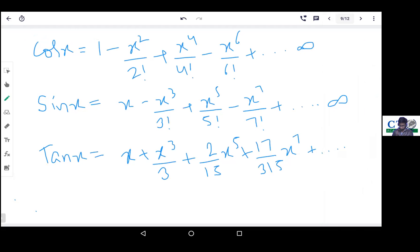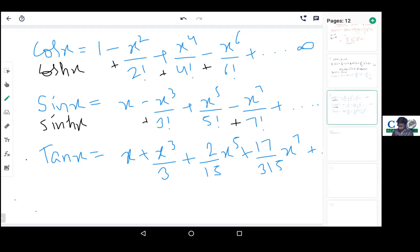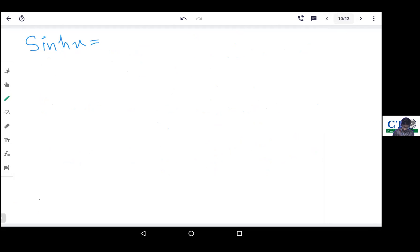Then there are hyperbolic functions. For hyperbolic functions, all the signs become plus. In the hyperbolic sine function, the plus signs replace the minus signs in the regular sine expansion, but the formula otherwise remains the same.